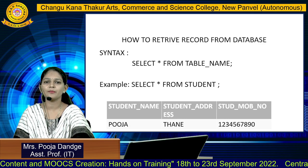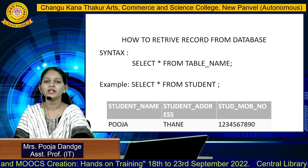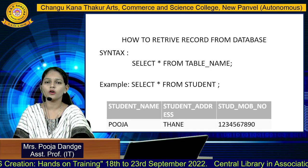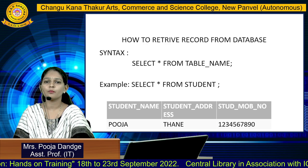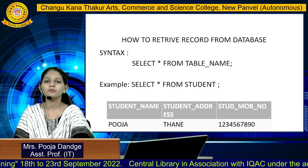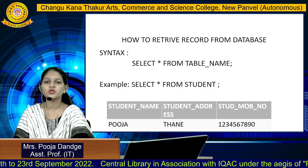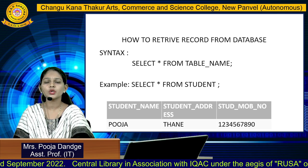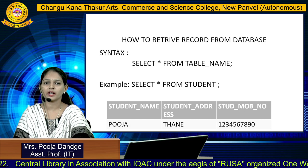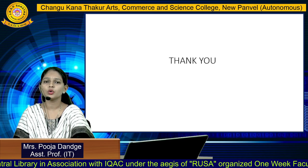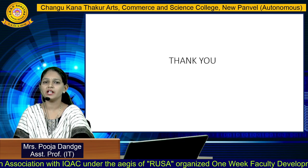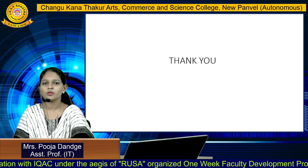Whenever I execute that command on the command prompt, the database will show that type of record — it gives the detailed record of your database with proper output. In my student table I inserted only one row, so the output shows Puja with her address and contact number. I hope you are clear on the DML concept. Thank you so much for listening.